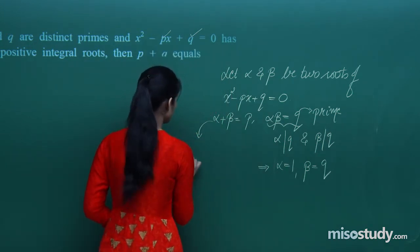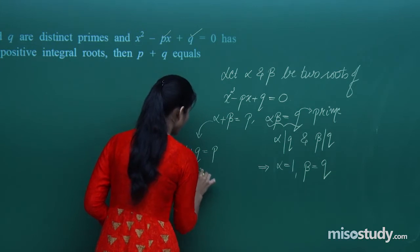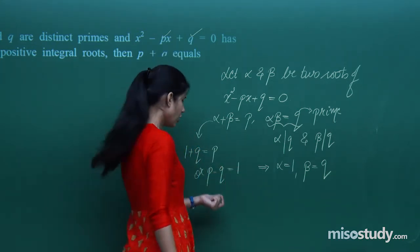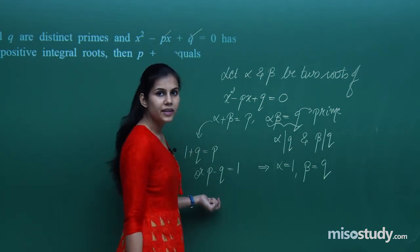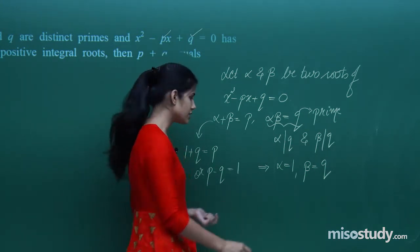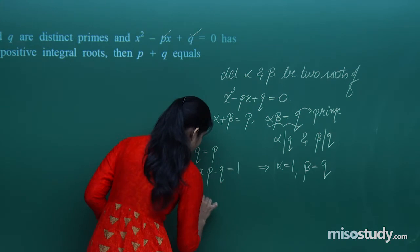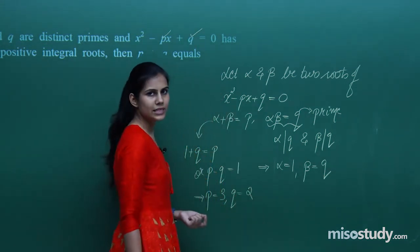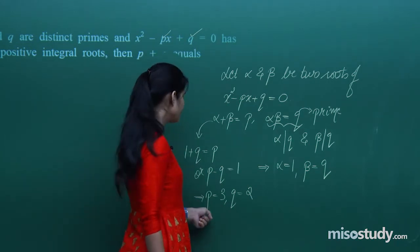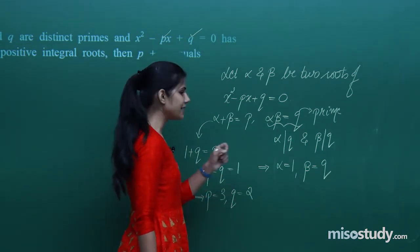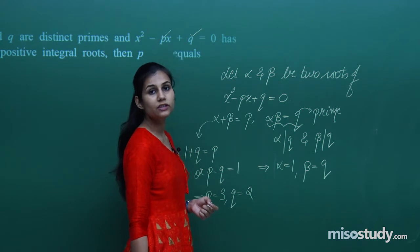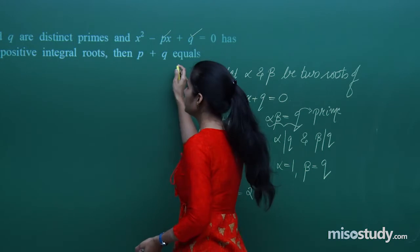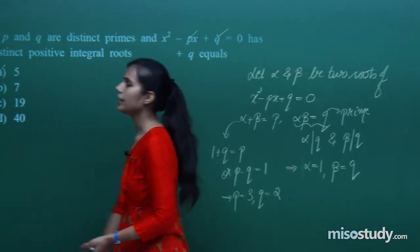If alpha = 1 and beta = q, then the sum gives 1 + q = p, or p - q = 1. Now if p and q are both primes and their difference is 1, the only option is p = 3 and q = 2. Therefore p + q = 5.